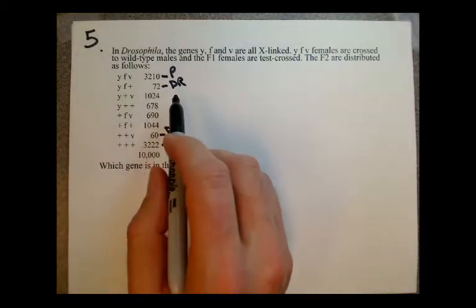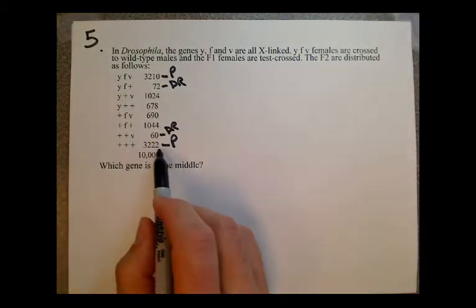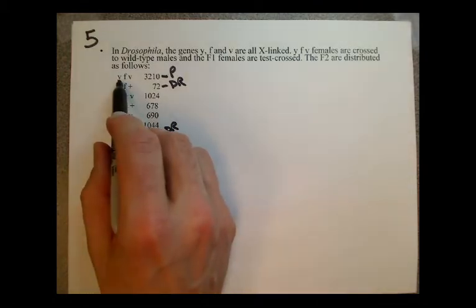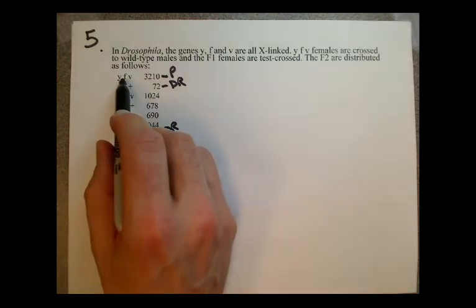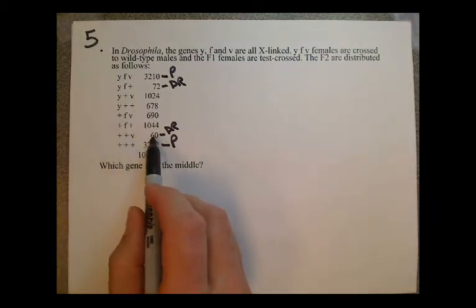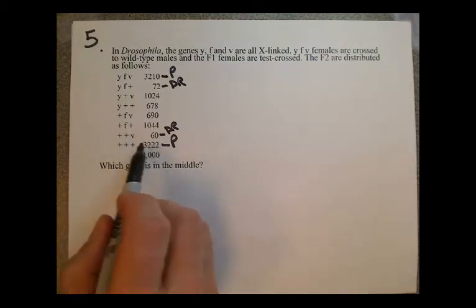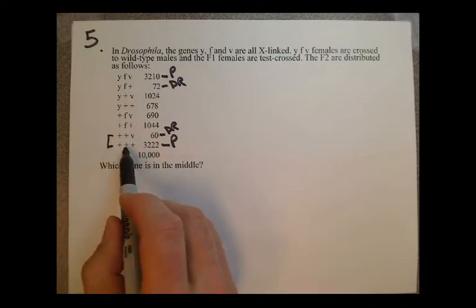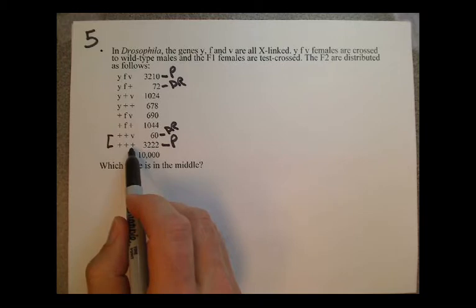Just like in the last problem, we want to compare a parental to a double recombinant. In this case, with these three genes Y, F, and V, if we compare these two down here, we can see that Y matches, F matches, but V doesn't. So V is the gene which is in the center.